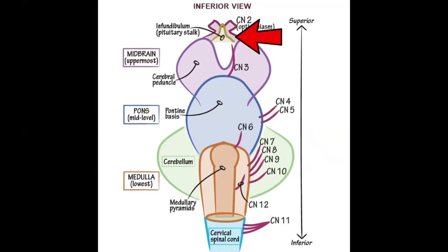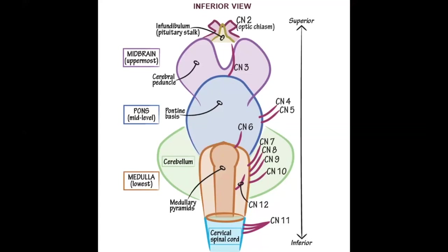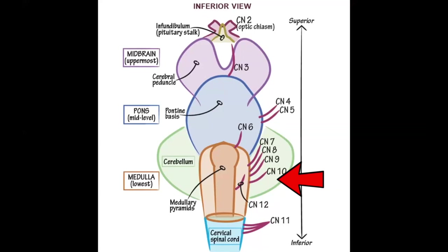The second cranial nerve arises from the top of the midbrain. The third cranial nerve, the oculomotor, arises at the junction of the midbrain and the pons. The fourth and fifth cranial nerves arise from the pons itself. The sixth cranial nerve arises from the pontomedullary junction, while the seventh and eighth cranial nerves arise from the lateral aspect of the midbrain. The ninth, tenth and twelfth cranial nerves arise close to each other from the midbrain, while the eleventh cranial nerve arises most inferiorly from the cervical spinal cord.